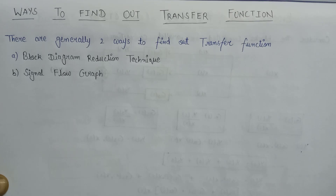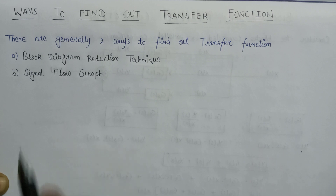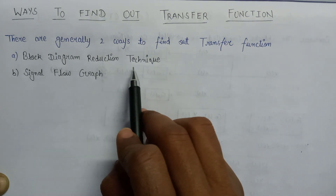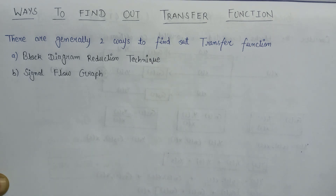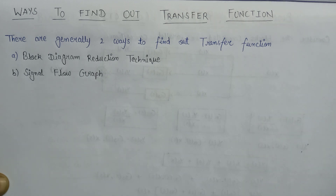Welcome. In this lecture, we are going to learn about the possible number of ways to find out the transfer function. A transfer function can easily be calculated by the help of two ways. First is the block diagram reduction technique, and second one is a signal flow graph. The block diagram reduction technique is a very simplest technique for the calculation of transfer function.